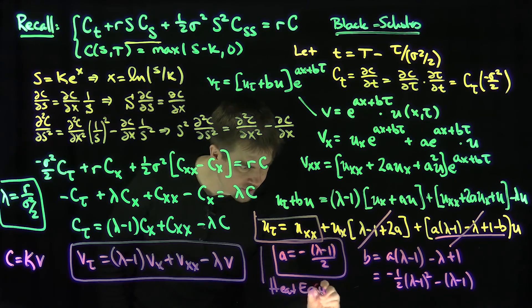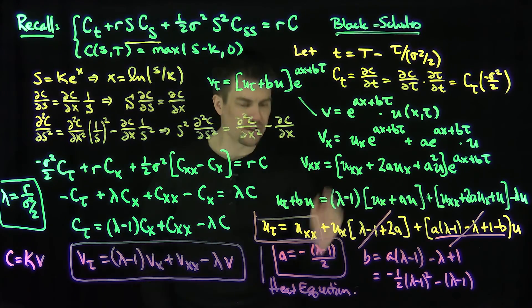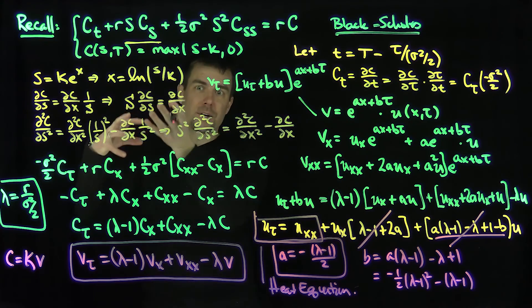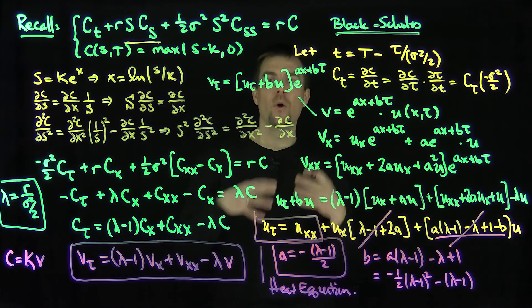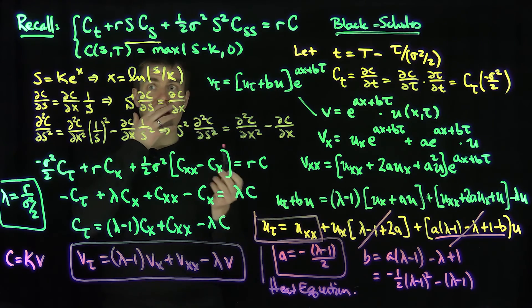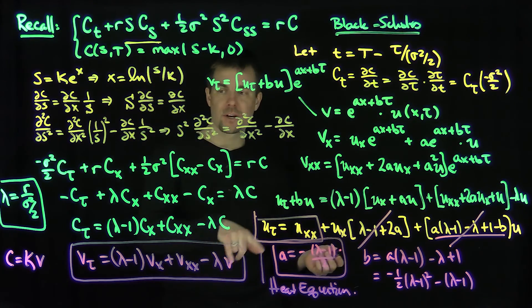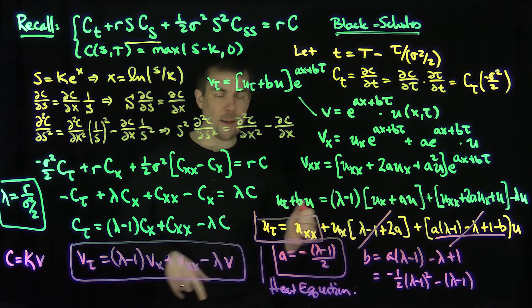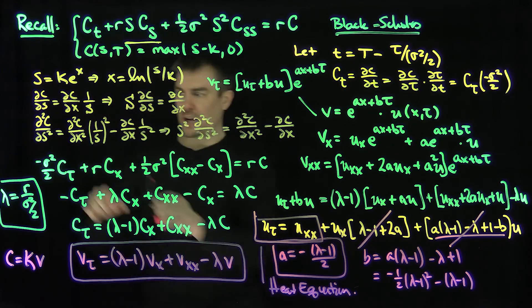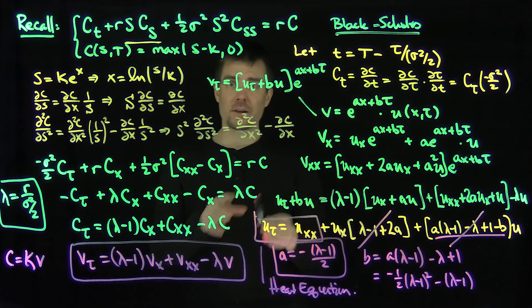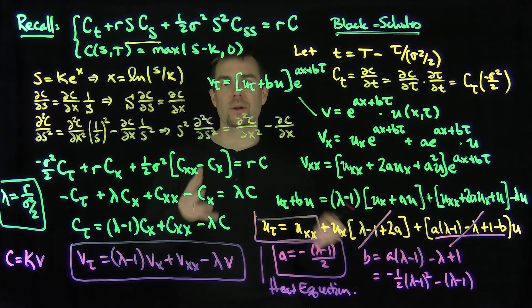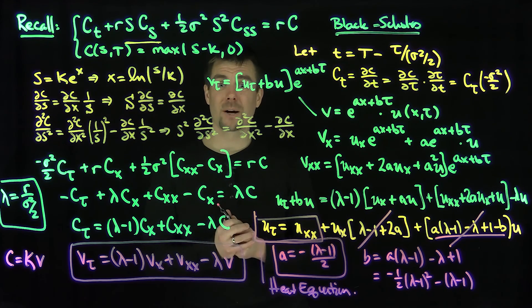We'll see in a few other videos how to solve the heat equation, and how we can reverse this process to write down the well-known solution to the Black-Scholes equation. One final note: the boundary conditions for the u equation will change according to these transformation rules, and we'll carefully write those down in the next video. Thank you very much.